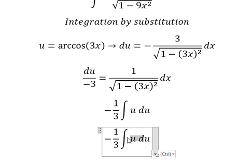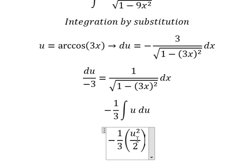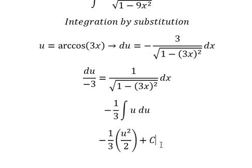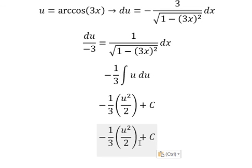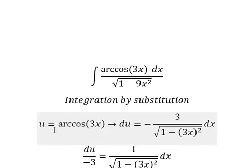The integration of this one, we have U² over 2, and we put C. Number 2 and number 3, we have 1 over 6. About U, that is about arccos(3x)².